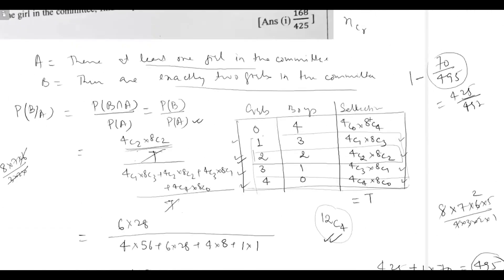Using this complement method, you only need to calculate two values — the no-girl case and the total — instead of summing four separate cases. This gives the same answer more efficiently.